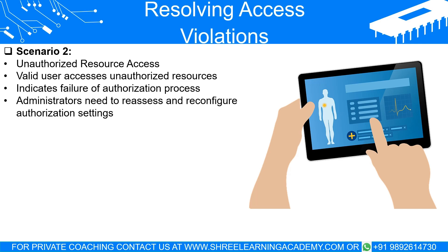Unauthorized Resource Access. The second scenario, unauthorized access to a resource by a valid user, happens when someone who is already allowed into the system accesses parts of it they are not supposed to — and this indicates a failure of the authorization process. Authorization is like the rules of your house: just because someone is allowed in the front door doesn't mean they are allowed into every room. For instance, consider a hospital's patient record system where a receptionist who should only have access to patients' contact details can view their entire medical histories. This unauthorized access is a clear violation indicative of flawed authorization settings.